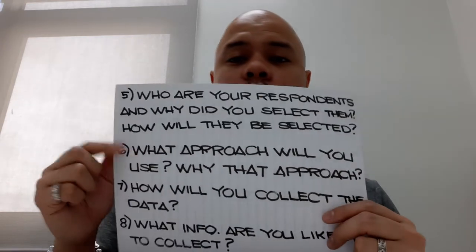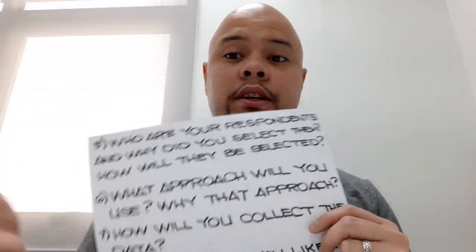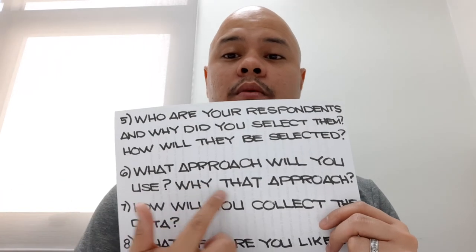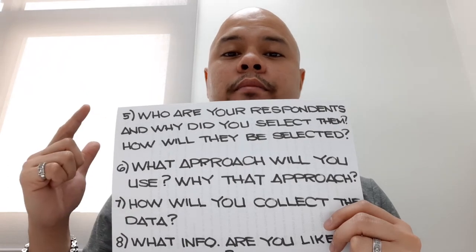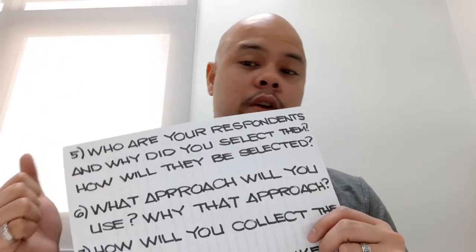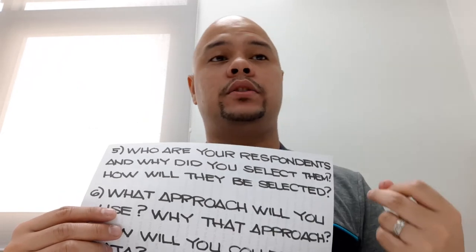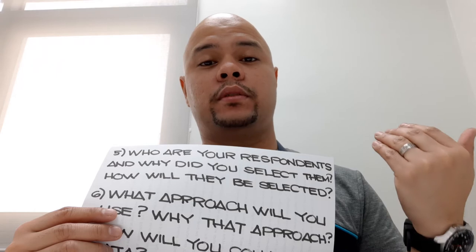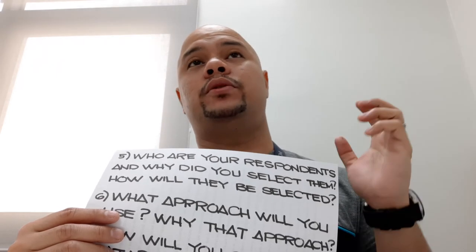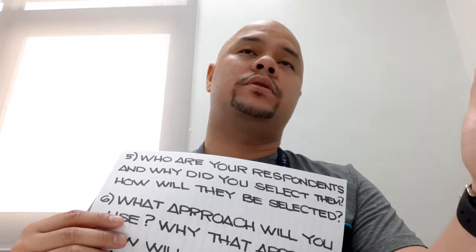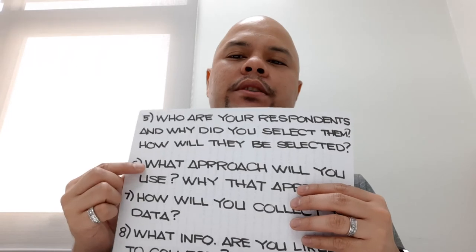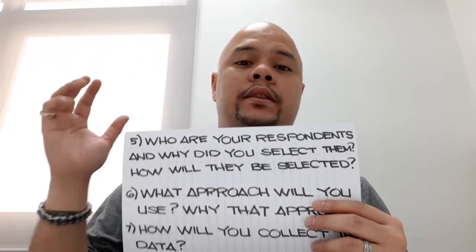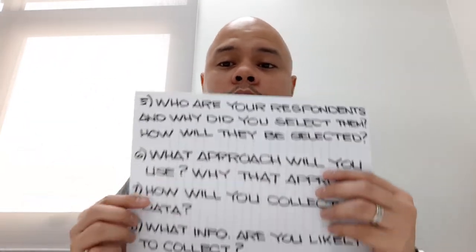Number six: what approach will you use in your study — the research approach — and why that approach? This is the beginning of chapter three or the research design. You are going to have to justify why you used a descriptive approach, why you used the multiple case study approach, why you used the phenomenological approach, why the test-retest approach. All of those approaches will have to be justified to the research panel, because sometimes the approaches do not match the aim or the goal of the study.